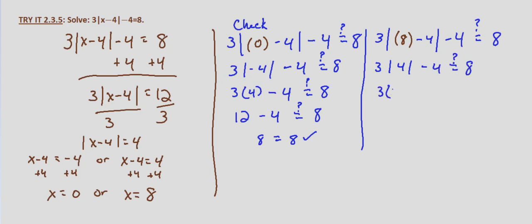3 times the absolute value of 4, minus 4, which is 12 minus 4. And that is verified as well because 8 equals 8.